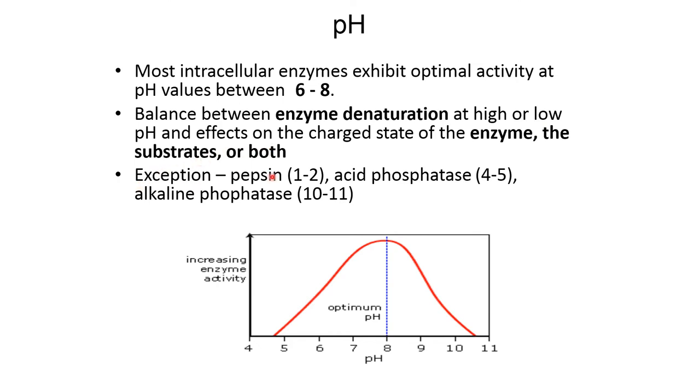Exceptions like pepsin have a pH range from 1 to 2. Acid phosphatase pH range is between 4 to 5. And in case of alkaline phosphatase, the optimum pH range should be between 10 to 11.